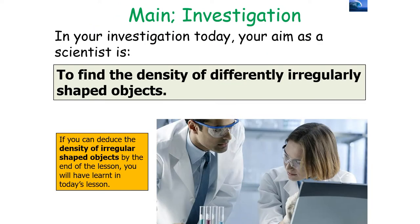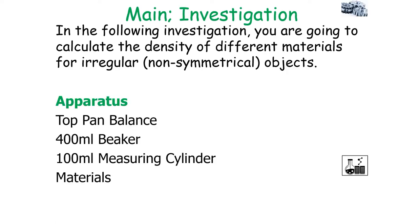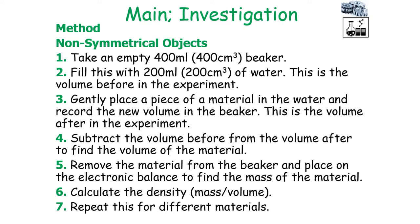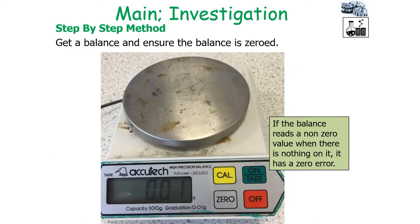In the second investigation, you can work out the density of different irregularly shaped objects. You need a top-pan balance, a 400 ml beaker, a 100 ml measuring cylinder, and some materials. Take an empty beaker, fill it with water, gently place a piece of material in the water, and record the new volume. Subtract the initial volume from the final volume to find the volume of the material. Remove the material from the beaker, place it on the electronic balance to find the mass, and calculate density equals mass over volume.